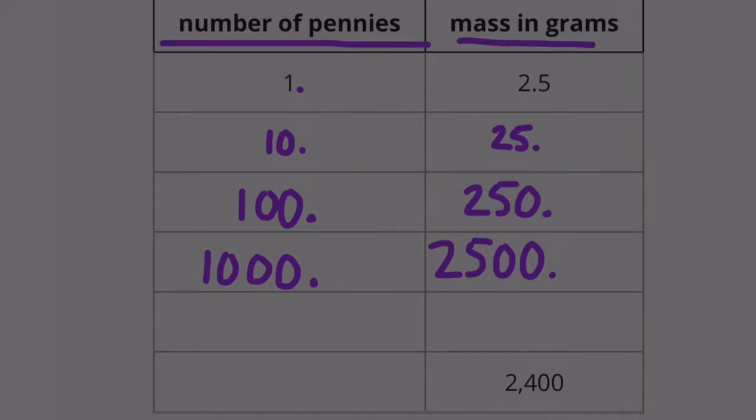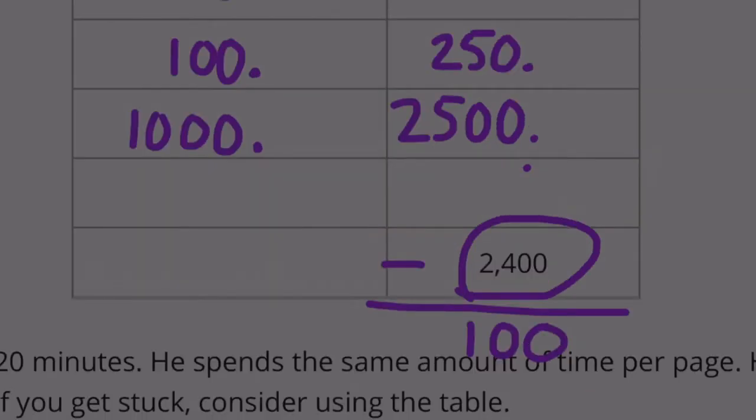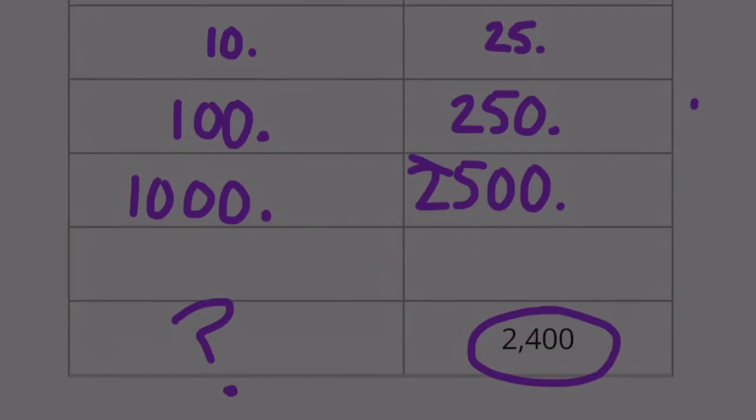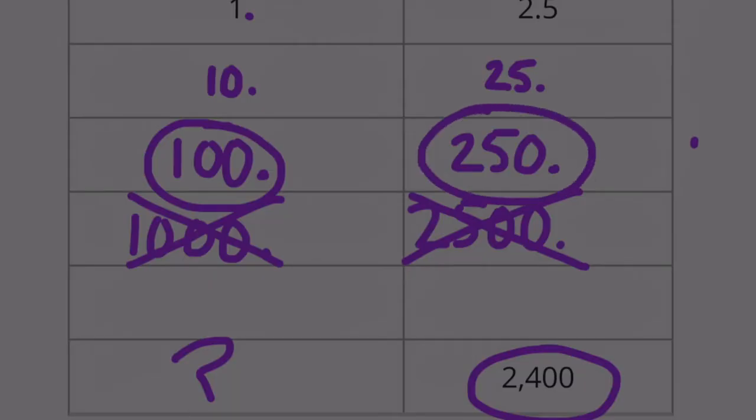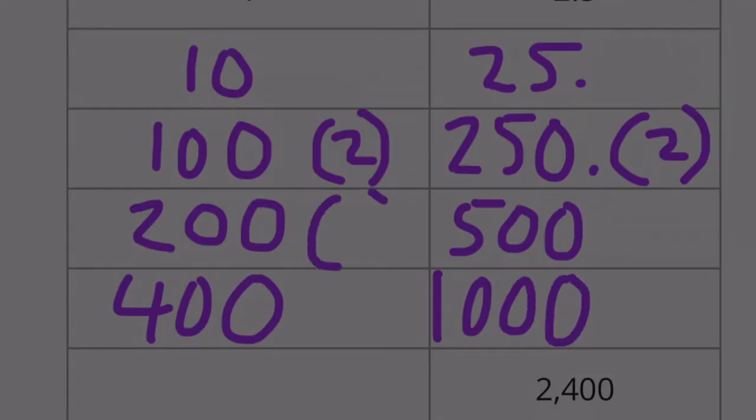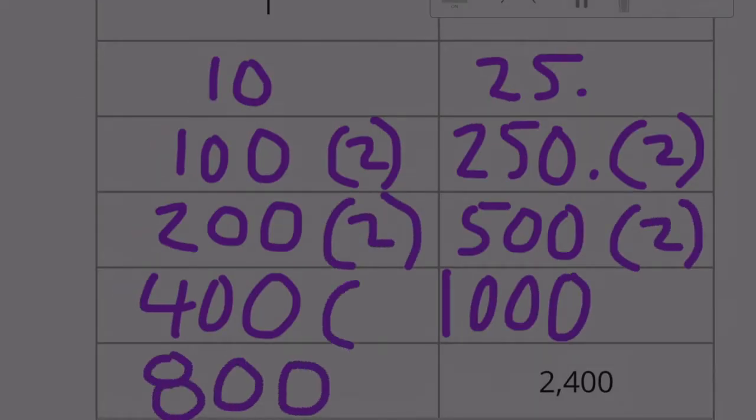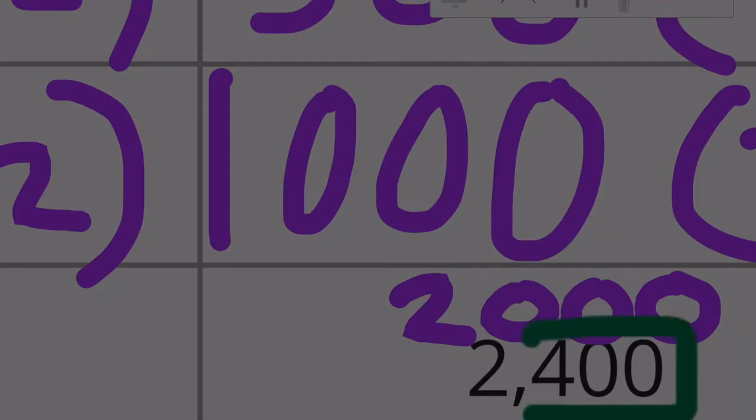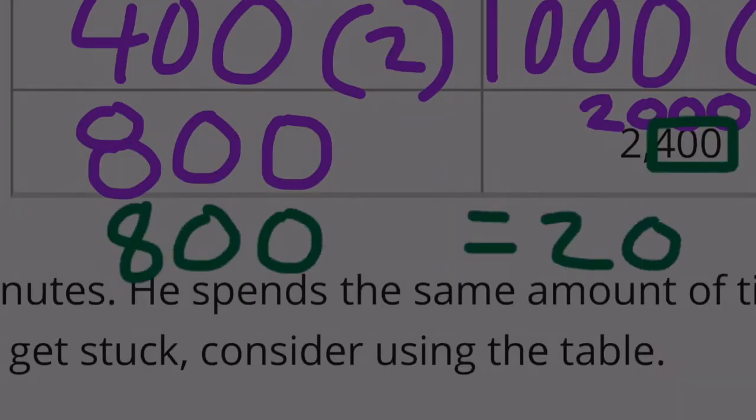So now we have some information that we can use. We have the number of pennies, and we have the mass in grams. The mass in grams that we're looking for is 2,400. If 1,000 pennies equals 2,500 grams, then how many pennies equals 2,400 grams? Well, this one's too large, 2,500, so we'll get rid of this one. But we can use this. We can count by 250.